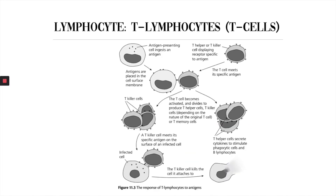Here we can see the action of those two cells, along with a flow diagram on how they work. First and foremost, we need an antigen-presenting cell with antigens. These antigens are exposed and attach to the cell surface membrane of this cell. When this comes in contact with a T cell, it causes the activation of that T lymphocyte. This T lymphocyte can then either become a T helper cell or a T killer cell.